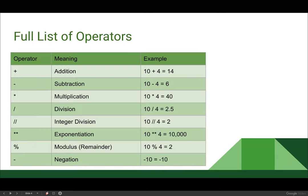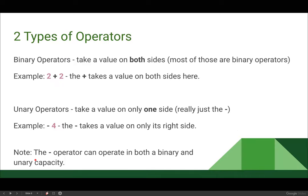If we go back to our table, there are two types of operators on this table. There are binary operators, which take a value on both sides, and most of the operators in that table are binary operators. And there is just one unary operator here, which only takes a value on one side. Really, it's just the minus here. So we can add with 2 plus 2. We can divide 2 over 2. Well, most of those operations require two values, where the negation operator requires just a value on its right side. And keep in mind, the minus can be used either for subtraction or negation, depending on how you use it.